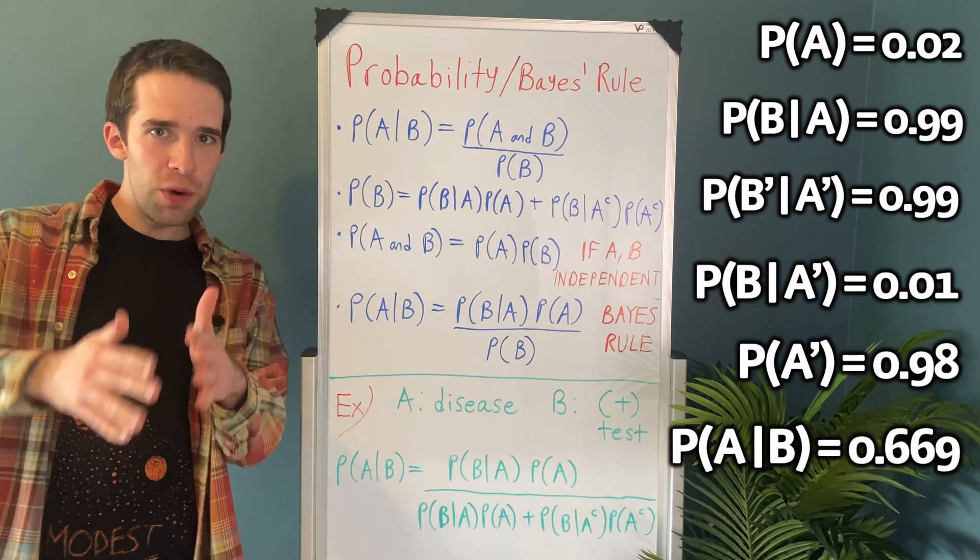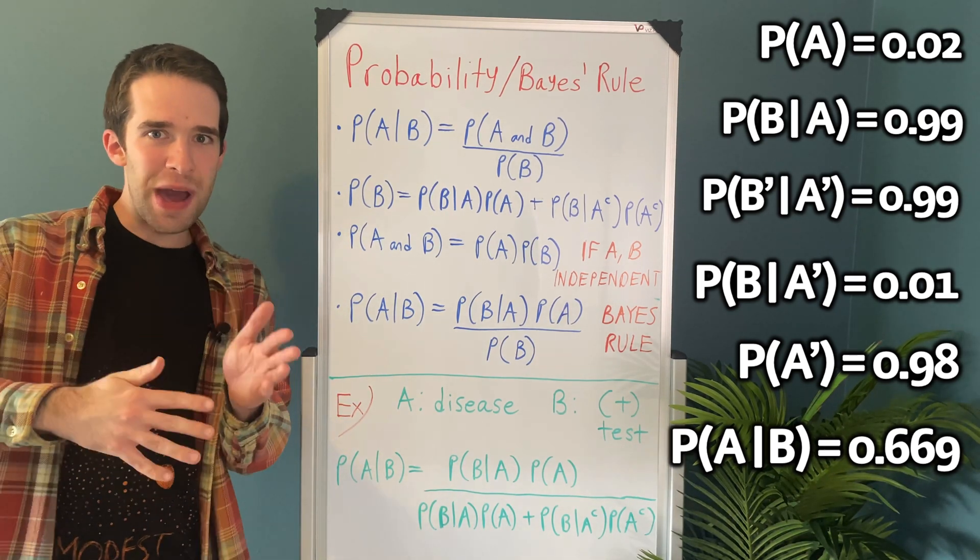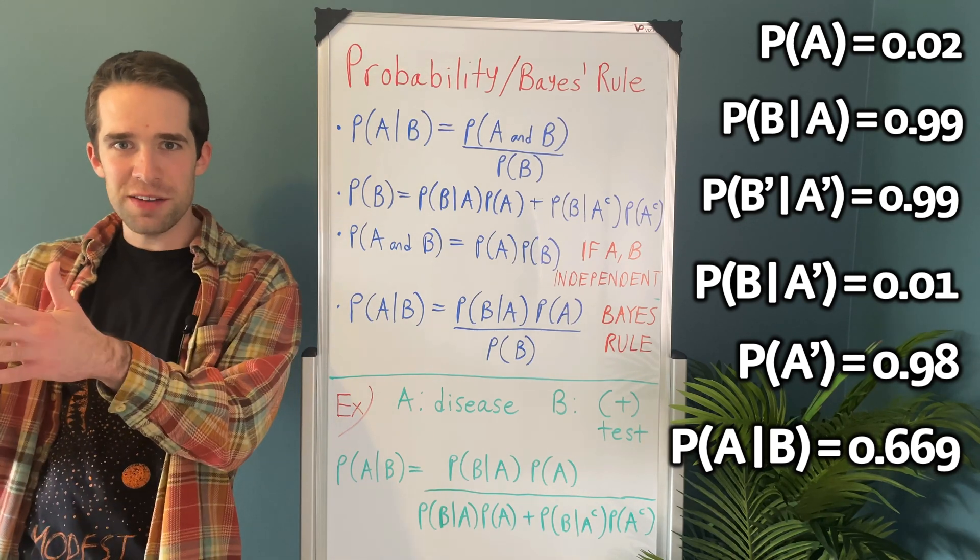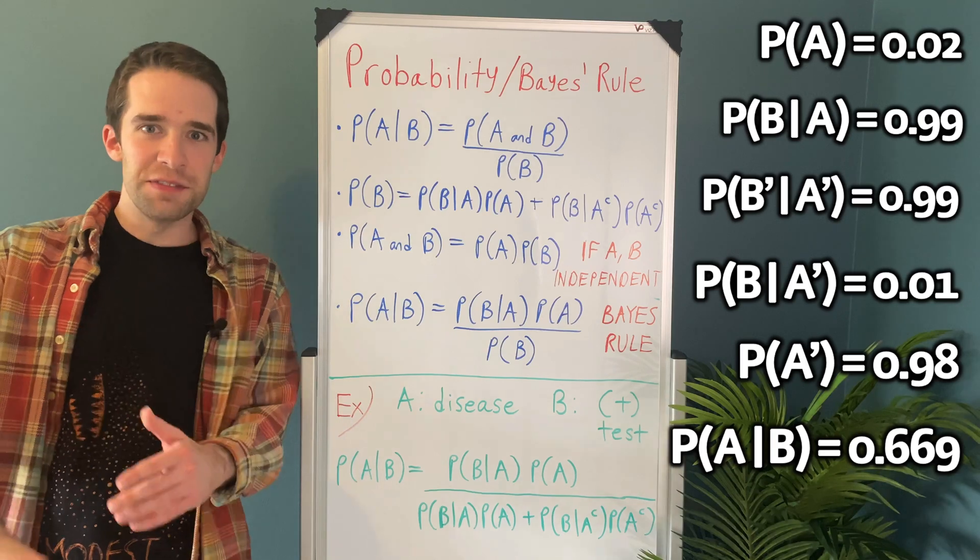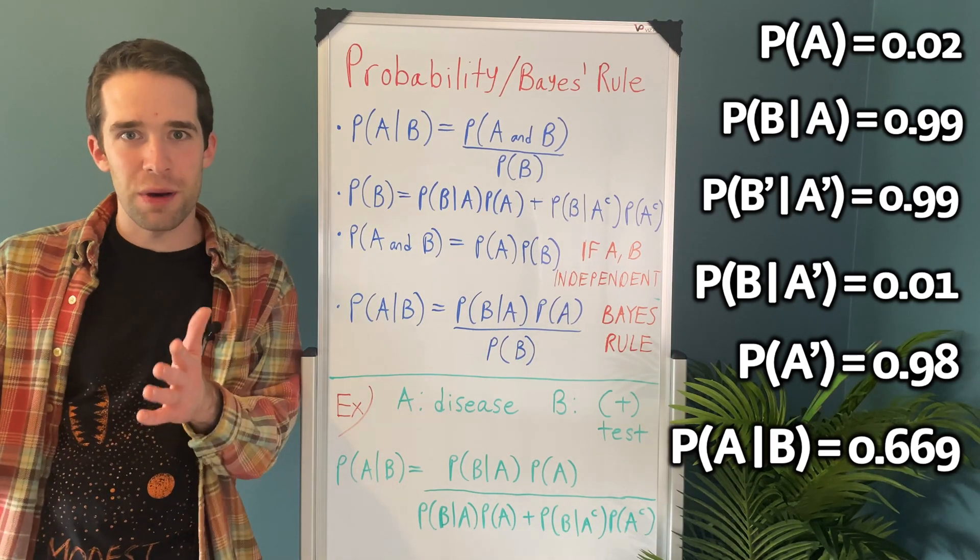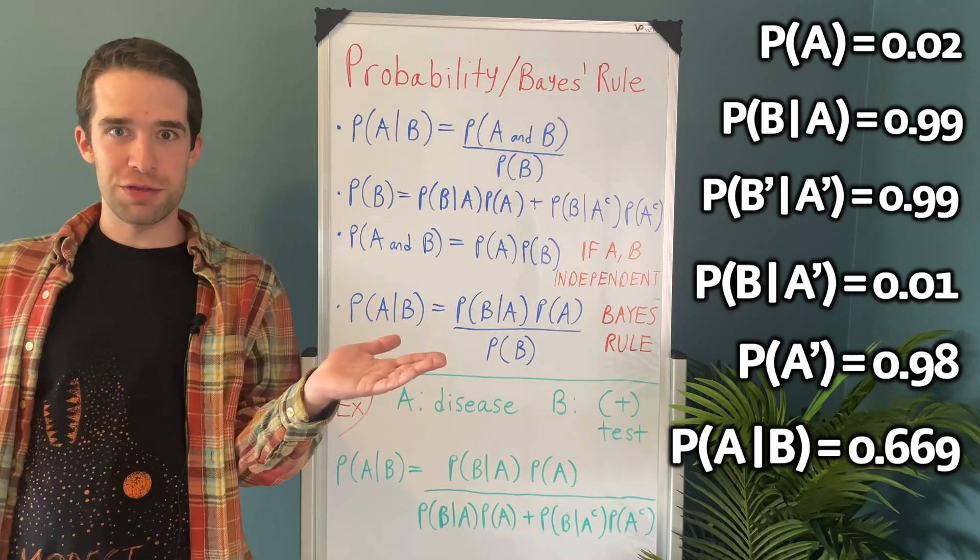Just think about it. If there's a 0.669 chance that you actually have the disease if you test positive, that must mean there's a 0.331 chance that you don't have the disease if you test positive. That's not great for anything.